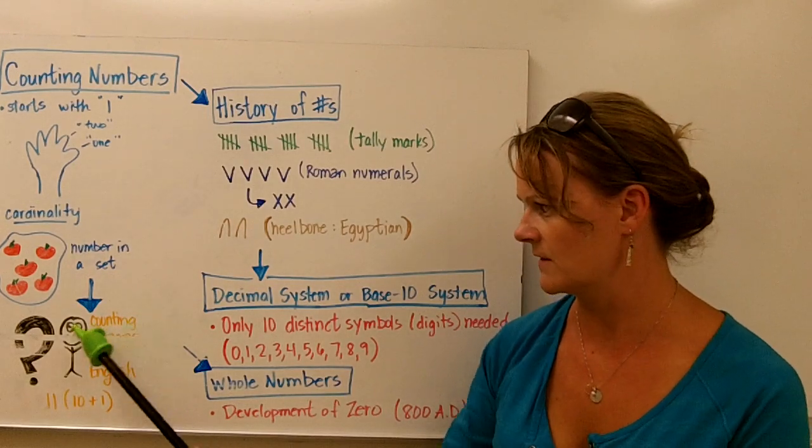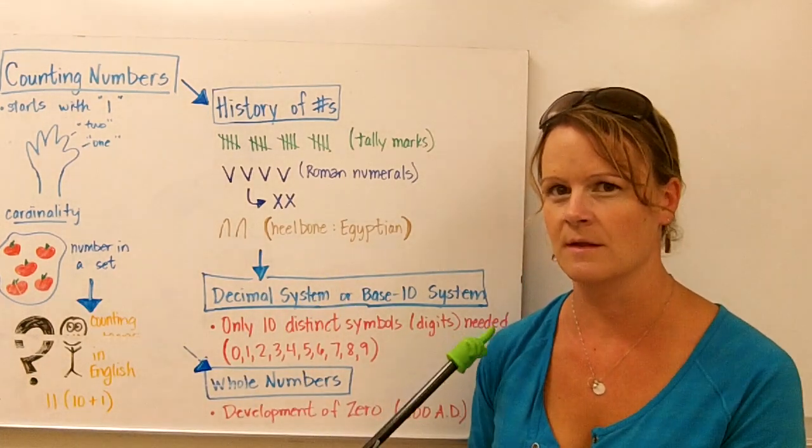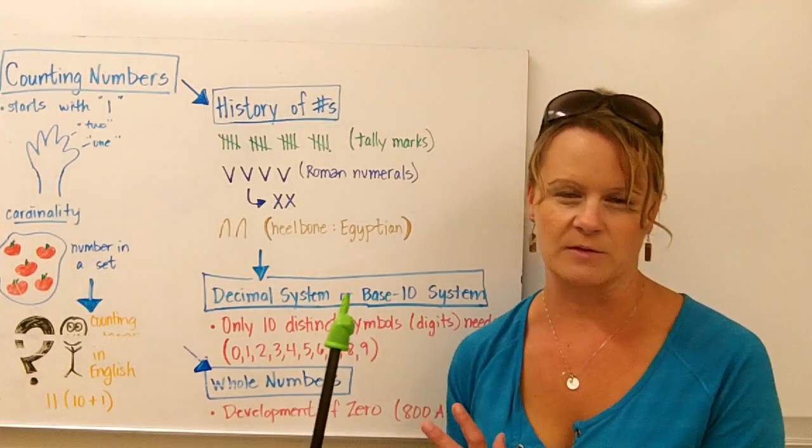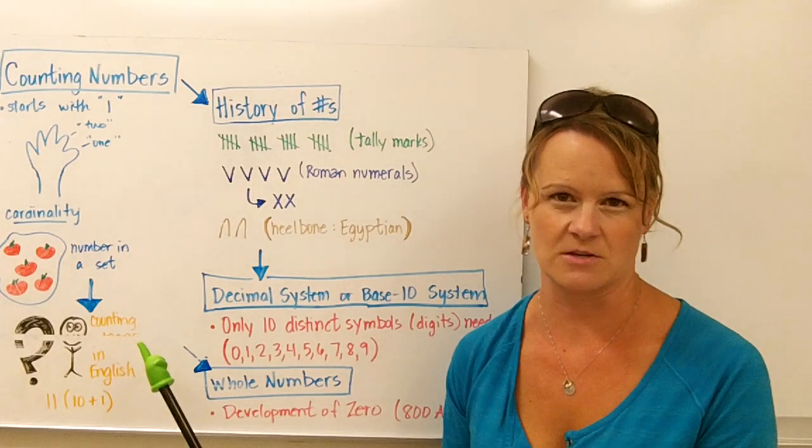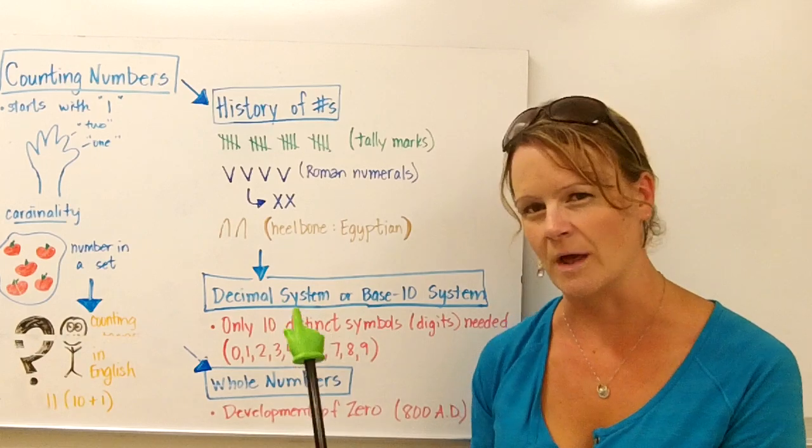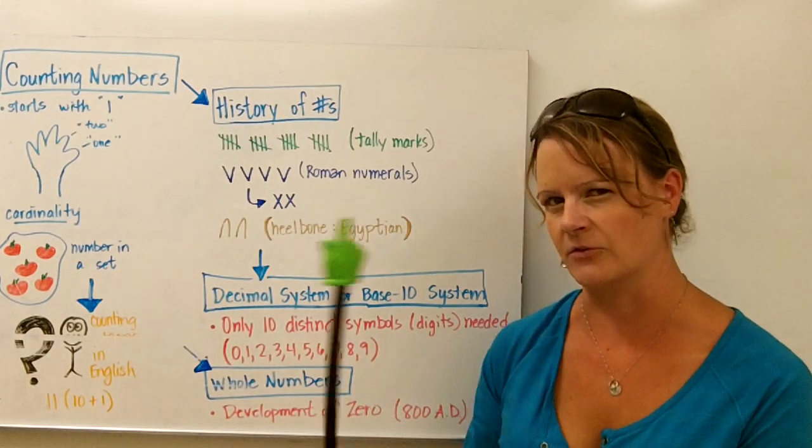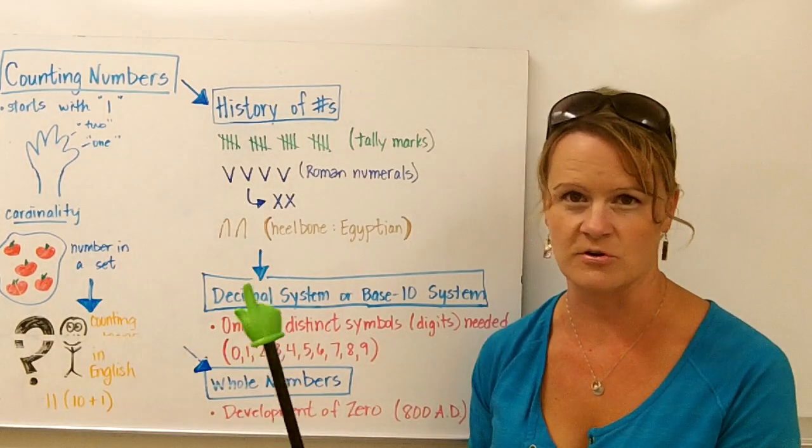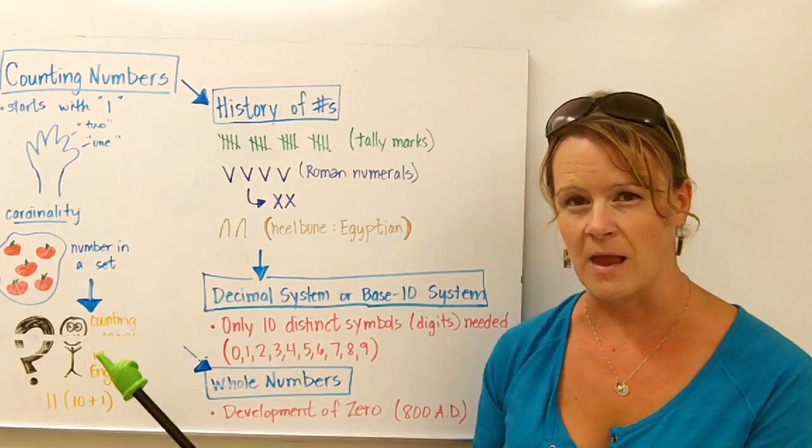The problem with counting numbers in English is that they don't always make perfect sense. Any time in these videos when you see a question mark like this, I'm pointing out a possible misconception that students might have. One of those places is when counting the teens in English. If you think about eleven, eleven does not sound anything like ten and one together. Think about twelve. The word twelve does not sound at all like ten and two more. So when counting, students get confused. Kindergarten, first graders get confused when counting in the teens because there isn't a lot of sense made in those actual words.